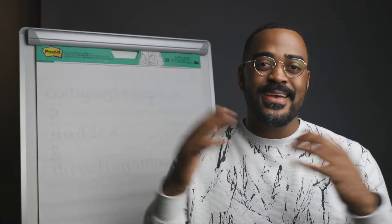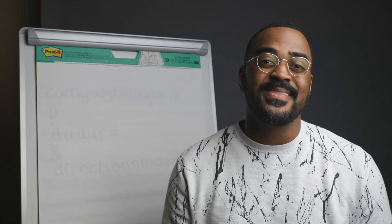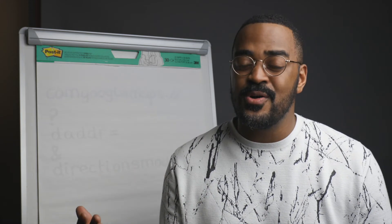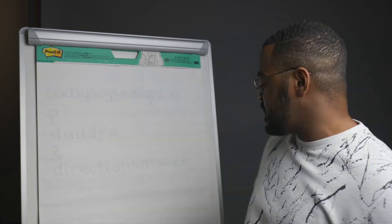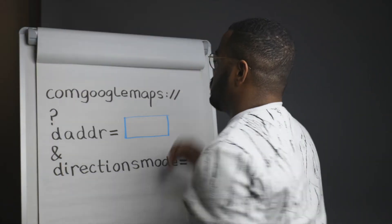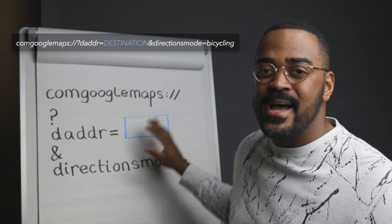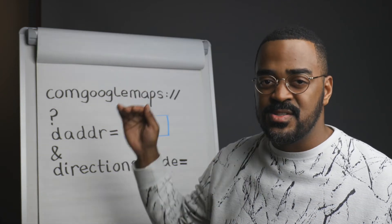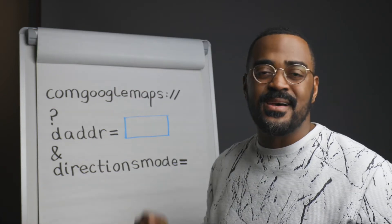Let's start with the end in mind. We'll build a shortcut that listens for where we want to go and then builds a web address that looks like this. Imagine all this is typed on the same line in your web browser — I just broke it into sections so we can talk about what each piece does.